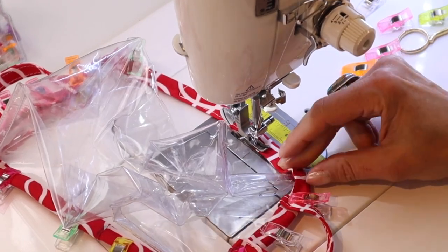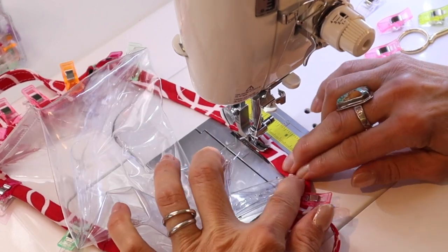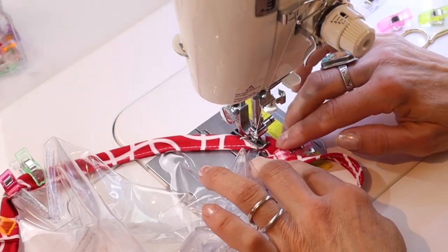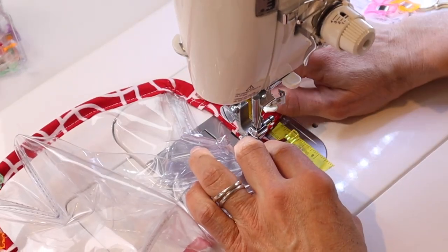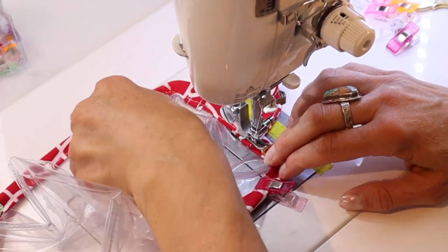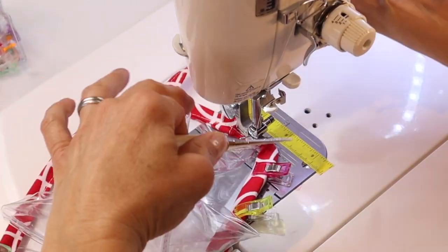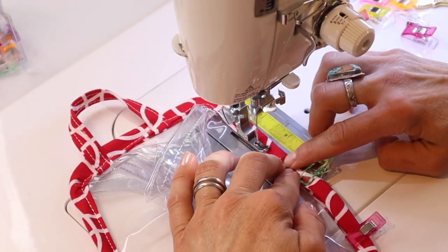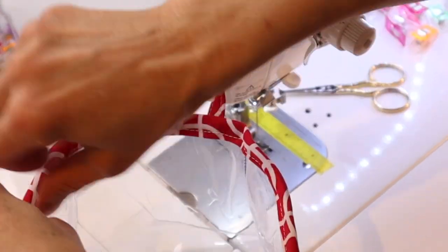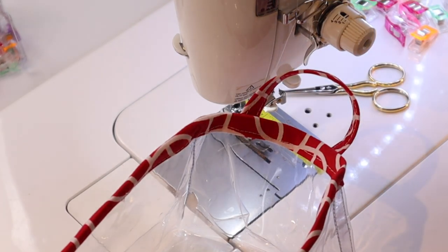And then when you get to the corners, if you want to make a little mitered corner, you can. Backstitch over the handles to provide extra support, and you can use a stiletto to help guide it if need be. Okay, then you can use the hair dryer and shape it a little bit and you're done.